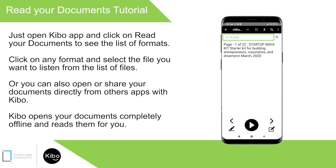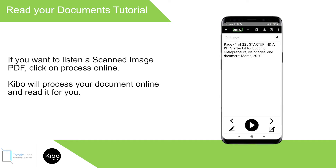In the offline PDF reader, use the 'Go to Page' edit box and the Play button to start listening. For example, page 1 of 22 of the Startup India Starter Kit will be read aloud. If you want to listen to a scanned image PDF, click the 'Process Online' button and Kibo will process your document online and read it for you.